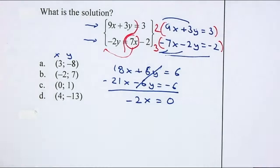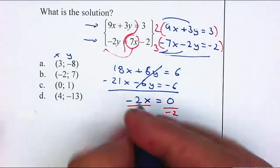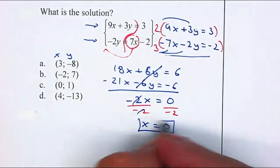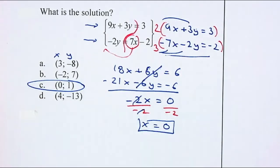I still need to go through the process. I'm going to divide by negative 2, divide by negative 2. x is equal to 0. The x value is 0. So therefore, your answer will be letter C.